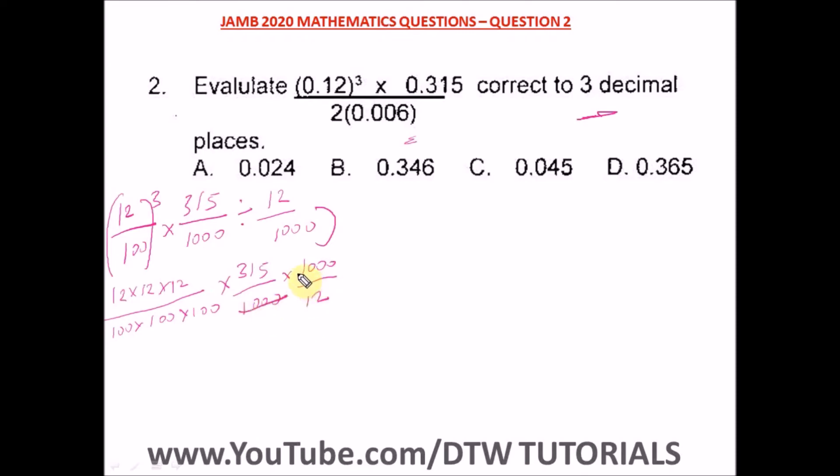We work this out. For here, 3 goes into 12 four times - we get 425. And 12 again, we have 3 goes into it. So we have 525, and 315 we have 63.